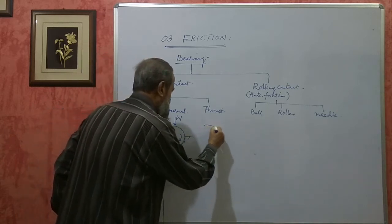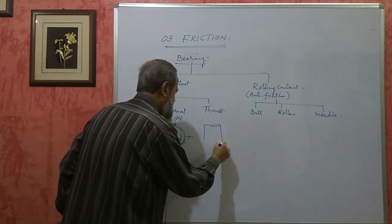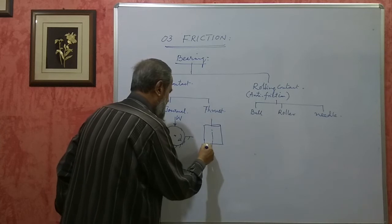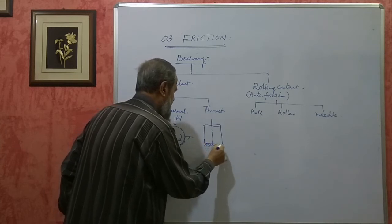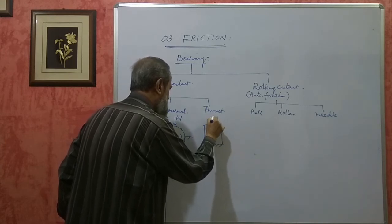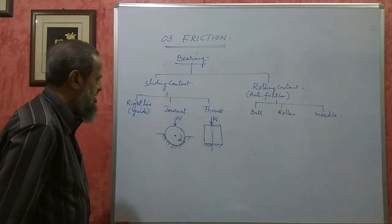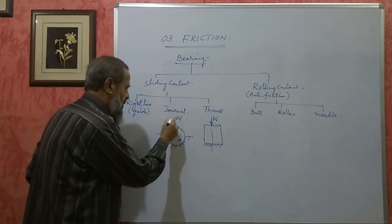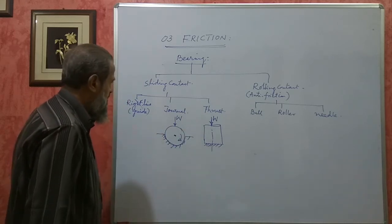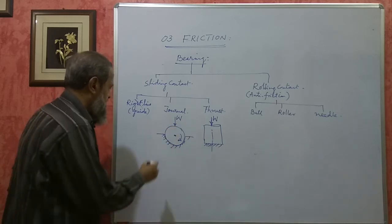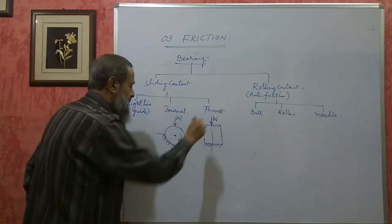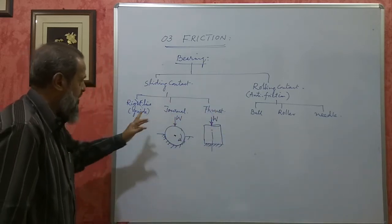In a thrust bearing, the shaft rotates and is supported such that the load is axial — parallel to the axis of the shaft. So the principal difference is: in a journal bearing, W is perpendicular to the axis of the shaft; in a thrust bearing, it is parallel to the axis of the shaft.